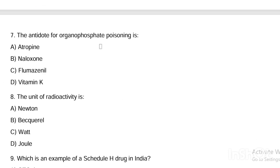Next question. Antidote for organophosphate poisoning is: Option A, atropine. Option B, naloxone. Option C, flumazenil. Option D, vitamin K. Answer is Option A — atropine is the antidote for organophosphate poisoning.